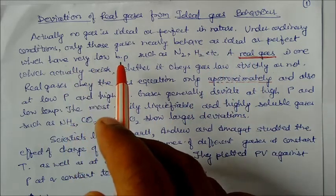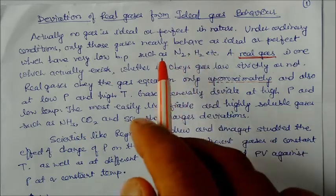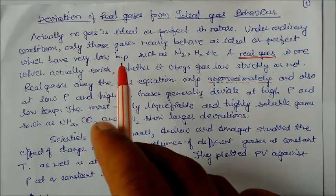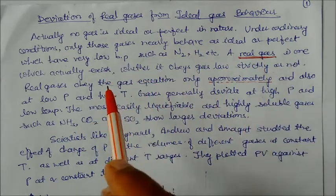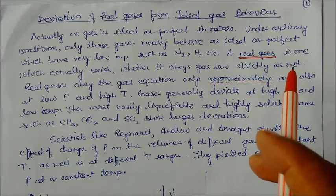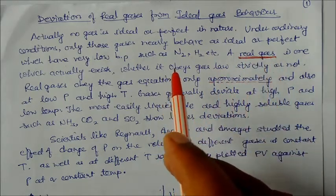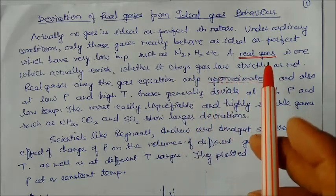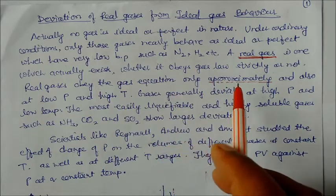Under ordinary conditions, only those gases nearly behave as ideal or perfect which have very low boiling points, like nitrogen and hydrogen. There are many such gases with low boiling points. A real gas is one which actually exists, whether it obeys gas laws strictly or not — that we have already discussed.